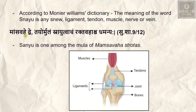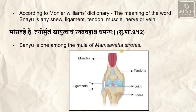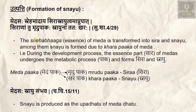The text states maamsavaha srotas dvi tayur mulam snayu — meaning snayu is one among the moolah, the roots, of maamsavaha srotas. There are two moolah of maamsavaha srotas, and snayu is one among them.